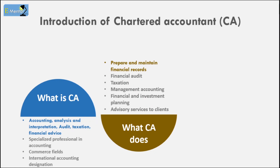Now let's understand what a CA does. First, financial record maintenance — which we have already seen. Then auditing — checking and verifying records. Taxes and payment compliance. Also cost management for companies, including manufacturing cost, sales, and company operations. CAs also provide investment planning and advisory services.